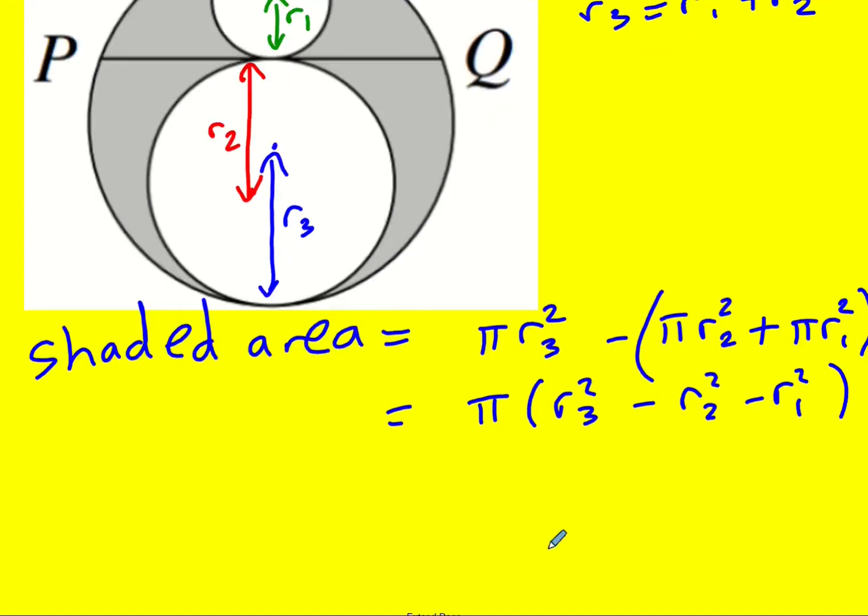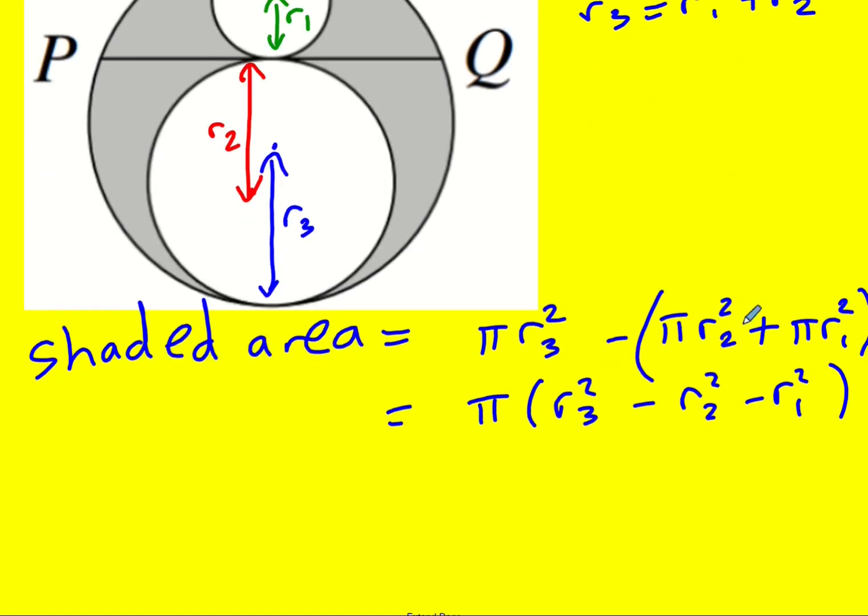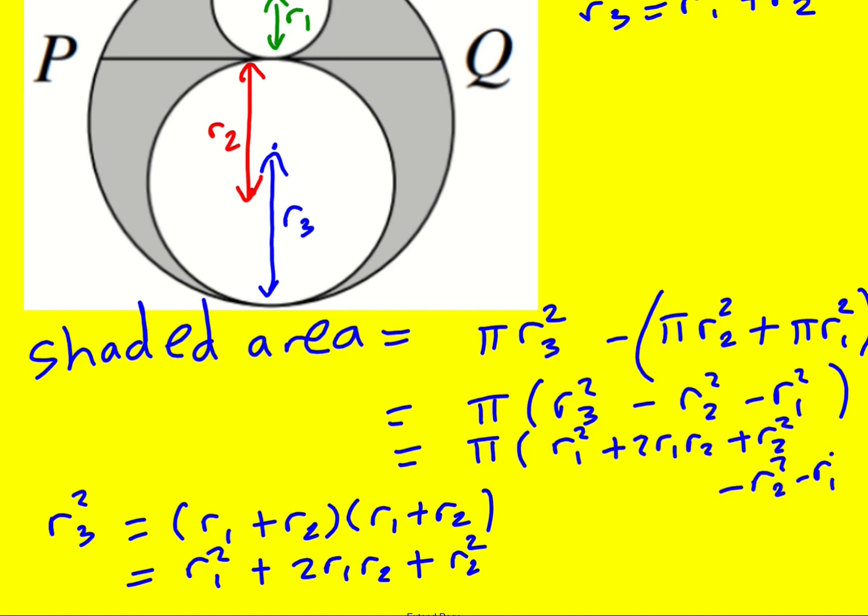Now actually, it might be worth doing this. We've got this relationship here as well. R3 is actually R1 plus R2. So R3 squared is going to be R1 plus R2 squared, or multiply it out like double brackets, which is going to be R1 squared plus 2R1R2 plus R2 squared. So when I substitute that in, and minus the R2 squared and minus the R1 squared, you see that in fact they just cancel. So our answer is going to be 2 pi R1R2.